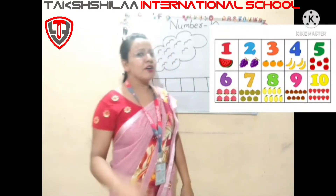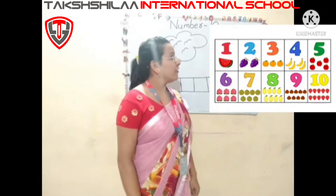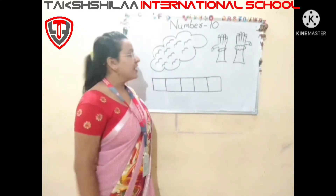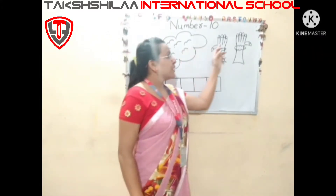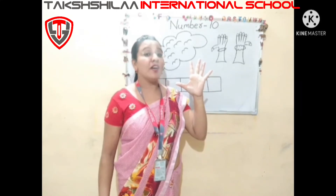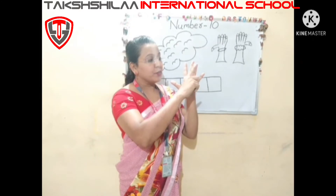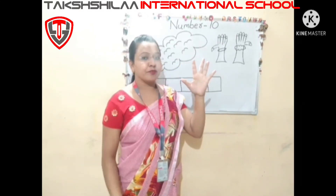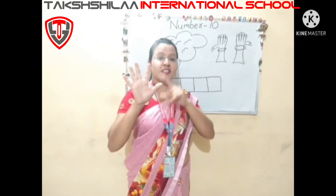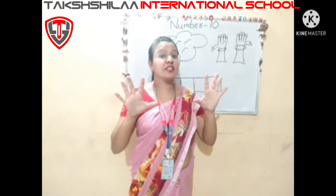Kids, do you remember what we are learning in this class? Today we learn how to write number 10. You can see here — this is my hand. I have 5 fingers in my one hand. Let's count: 1, 2, 3, 4, 5. And 5 fingers in my other hand: 6, 7, 8, 9, 10. I have a total of 10 fingers in my hands.